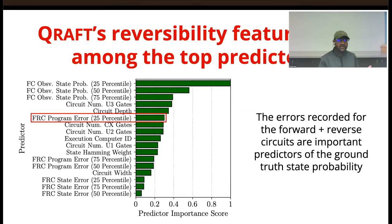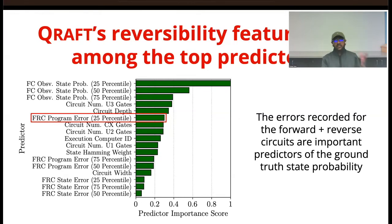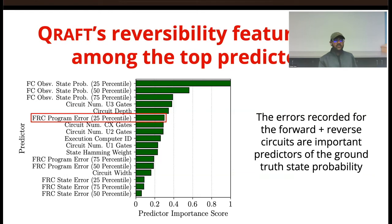We also wanted to see how effective the forward plus reverse circuit was in training. We looked at predictor importance in the ensemble of decision trees. The top three most important predictors are the state probabilities of the forward circuit, as expected. The 25th percentile forward plus reverse circuit program error is among the top 10 predictors, because it helps figure out the state error of those observed forward circuit state probabilities. If we remove the forward plus reverse circuit features, results get much worse and remain similar to Qiskit.